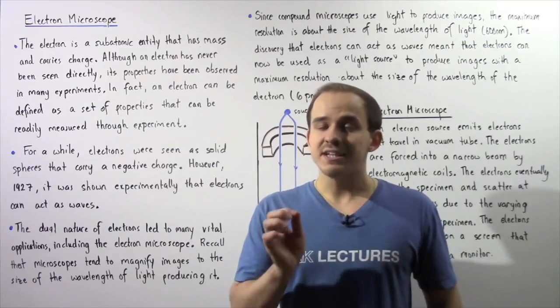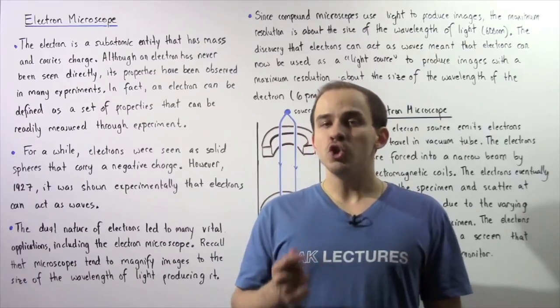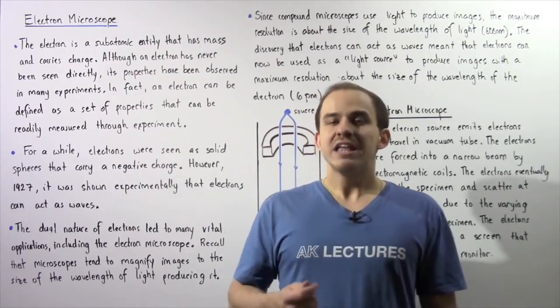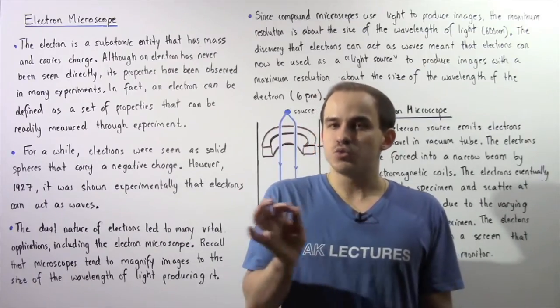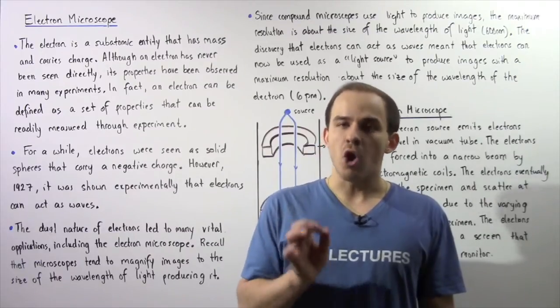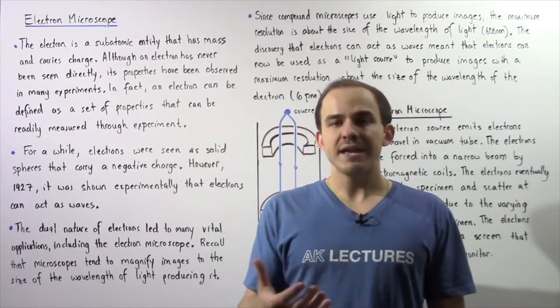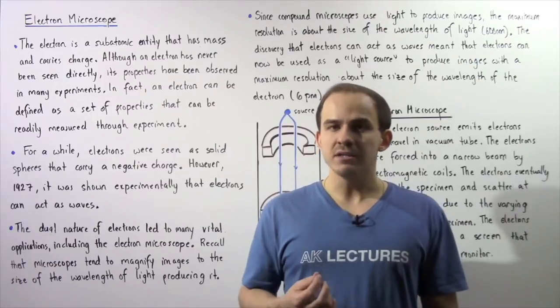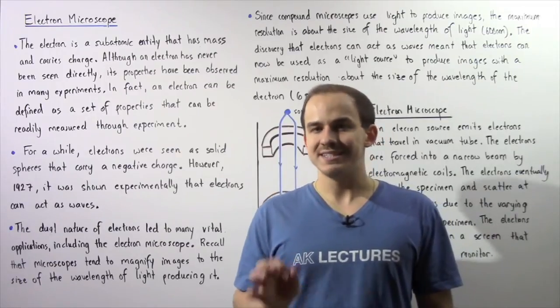However, in the year 1923, Louis de Broglie proposed that electrons act as waves or electrons act as particles. And this was basically confirmed experimentally in 1927.